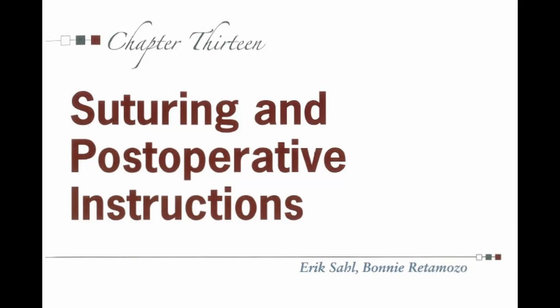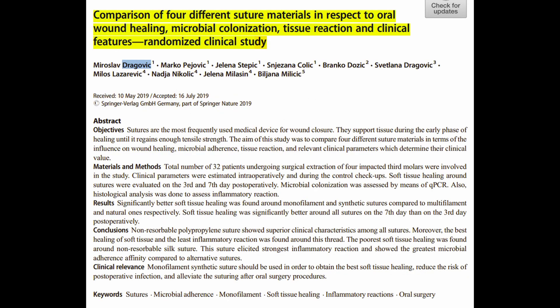The perfect suture for oral soft tissue should have certain mechanical and biological properties to ensure optimal healing and reduce tissue reactivity. Each type and size of suture has unique characteristics that not only affect its handling but also influence the healing process and the tissue response associated with it. The suture should be biocompatible, have the appropriate tensile strength for its purpose, be easy to handle surgically, and prevent premature untying.